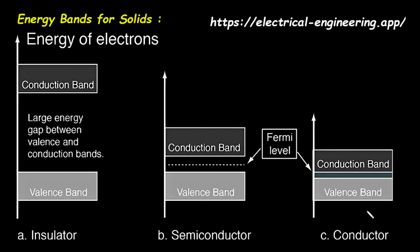So, to summarize what we've learned from these diagrams: the electrical properties of a material are determined by its electron band structure, specifically the energy gap between the valence and conduction bands. In an insulator, the energy gap is very large, preventing electrons from reaching the conduction band, so it cannot conduct electricity. In a semiconductor, the energy gap is small, allowing a few electrons to jump to the conduction band with thermal energy, resulting in a small amount of conductivity that can be controlled. And in a conductor, the valence and conduction bands overlap, meaning there is no energy gap, providing a large number of free electrons and making the material highly conductive. Understanding these energy bands is the key to understanding how all of our electronic devices work and why we choose specific materials for specific electrical jobs.